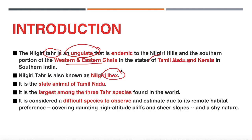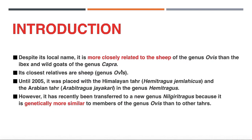Ibex is also a word used for Tahr, so it is also called Nilgiri Ibex. It is the state animal of Tamil Nadu and is the largest among the 3 Tahr species found in the world. It is a difficult species to observe and estimate because it lives in remote areas, at high altitude cliffs, and has a shy nature.